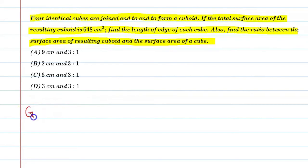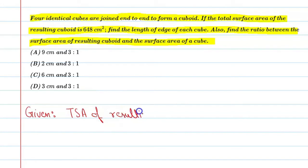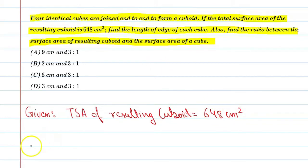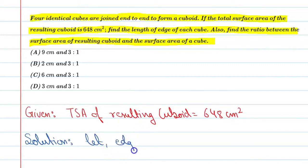So let's start this question. First of all we will write the given. Given: total surface area of resulting cuboid is 648 cm². Now let's start the solution. Let each side or edge of the cube be 'a'.